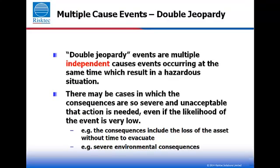The normal approach to a HAZOP is to consider only single failure events. However, in some cases it may be necessary to consider multiple failure cases. So-called double jeopardy events are multiple, independent events which occur at the same time. These events conspire to cause a hazardous situation. Double jeopardy events are not common, but they do occur. And even where the likelihood is very small, the consequences may be of such catastrophic proportions that provision has to be made to provide safeguards against them.